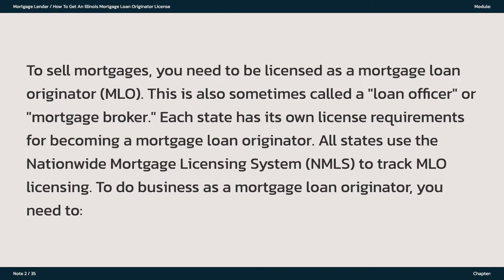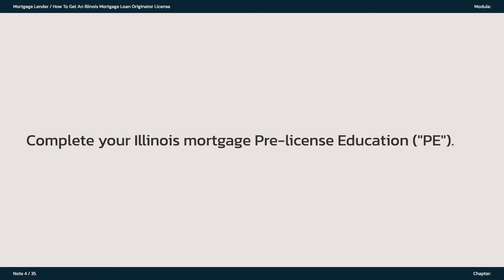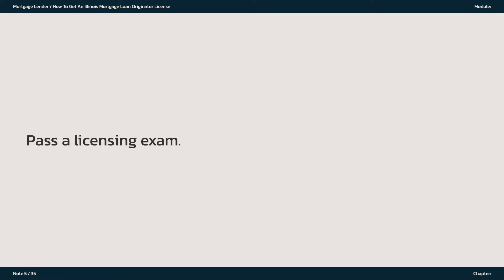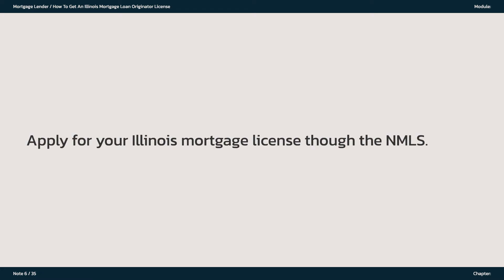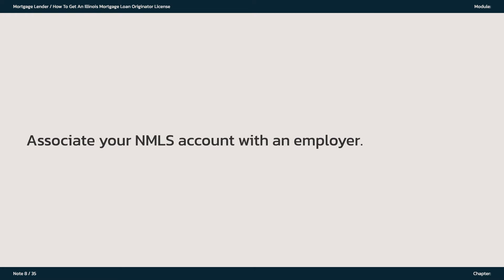To do business as a Mortgage Loan Originator, you need to: apply for an NMLS account and ID number; complete your Illinois Mortgage Pre-License Education (PE); pass a licensing exam; apply for your Illinois Mortgage License through the NMLS; complete background checks and pay all fees; and associate your NMLS account with an employer.